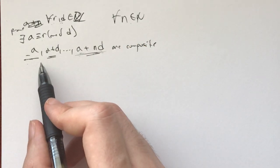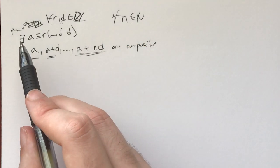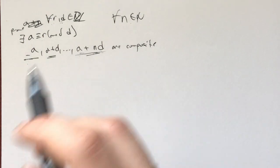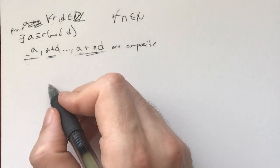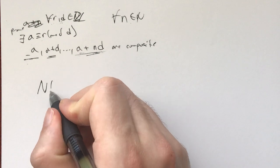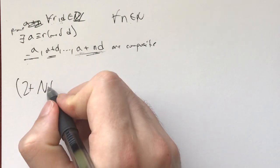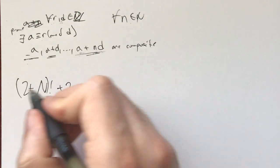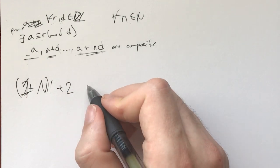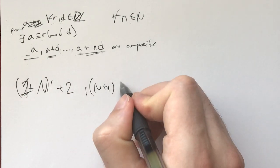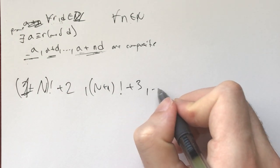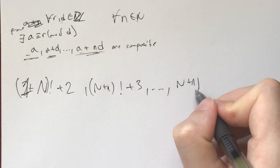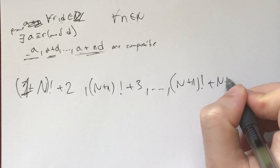Now the idea here is do you know how to construct consecutive composite integers? Well, if you've seen other problems on this channel, you know that if you take n factorial, say n plus 2 factorial plus 2, actually let's make it n plus 1 factorial plus 2, n plus 1 factorial plus 3, all the way till n plus 1 factorial plus n plus 1.